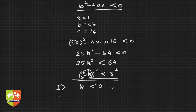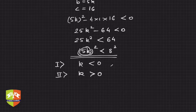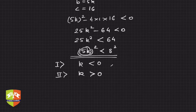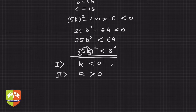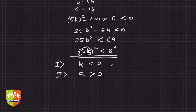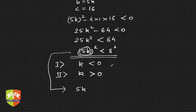In both cases, (5k)² must be less than 8². To solve this inequality, we rewrite it as (5k)² − 8² < 0.